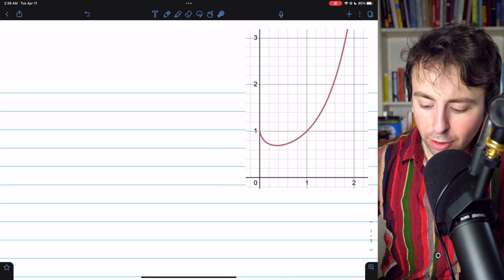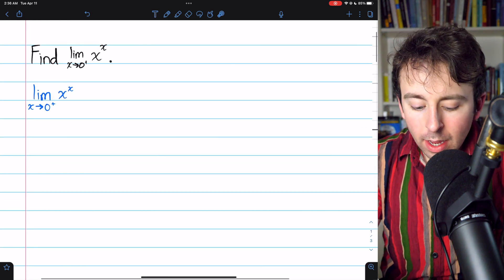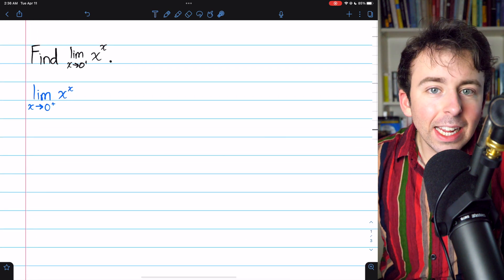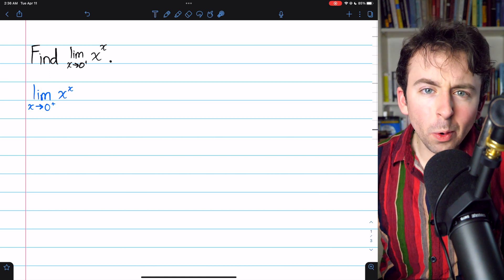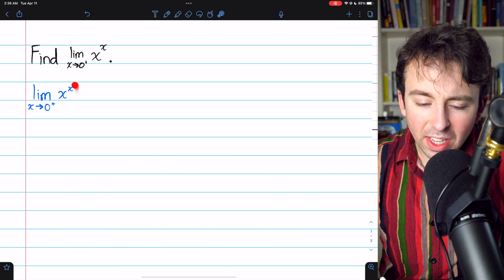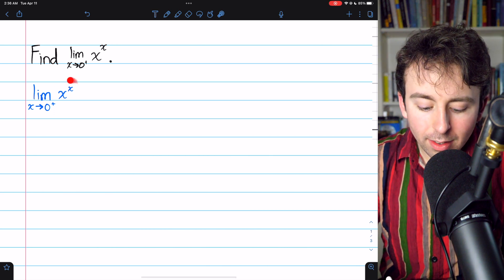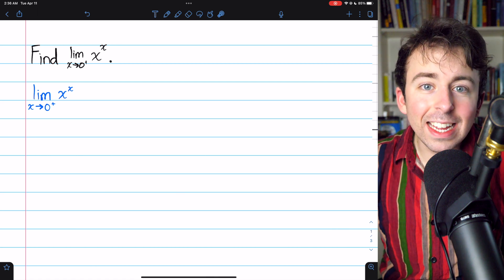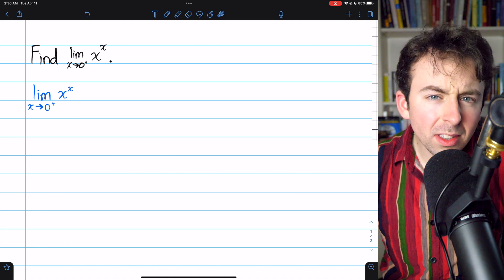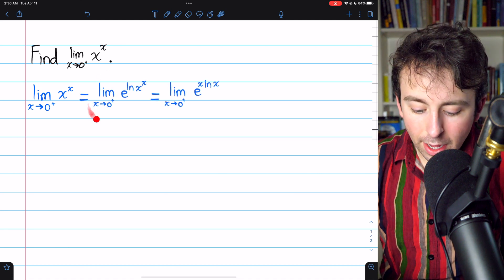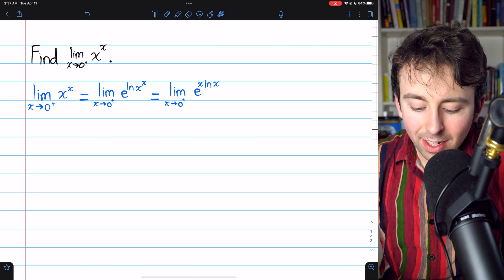So we should be expecting a limit of 1 once this is all said and done. Now, when we have a variable in an exponent, often it can be helpful to use a log function in order to start reworking what we've got, and that's exactly what we'll do here. We'll put all of this in the power of e, but then we'll put it in the natural log. The e and the natural log undo each other, so it's as if we didn't change the function at all. Just like this. e to the ln will undo each other.